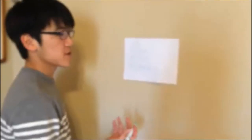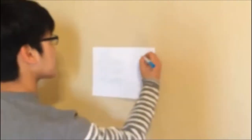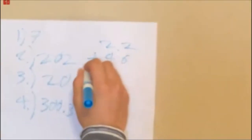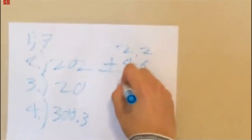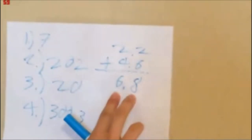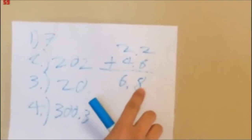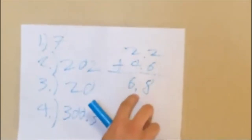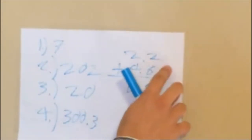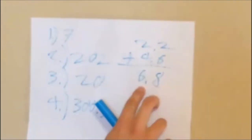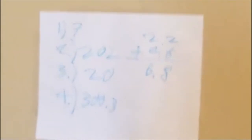For addition, 2.2 plus 4.6 equals 6.8, which has two sig figs. For addition, you look at the decimal places and take the least number of decimal places, so it will be only one decimal place, giving two sig figs.